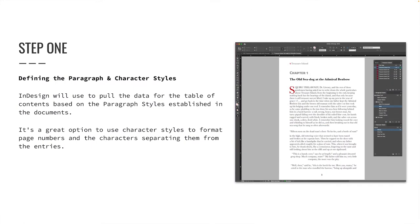As demonstrated in Lesson 14, using paragraph and character styles is crucial when working on a multi-chapter book. At the beginning of the design process, define the paragraph and character styles that InDesign will use to pull data for the table of contents. It's a great option to use character styles to format page numbers and the characters separating them from the entries. For example, if you want page numbers to be bold, create a character style with the bold attribute and select it when you make the table of contents.